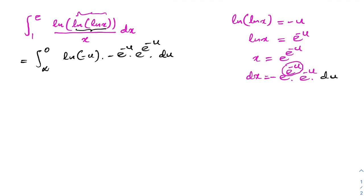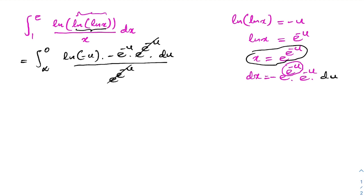Dividing by x, which is e to the e to the minus u, the e to the e to the minus u terms cancel. We have a minus sign, so we interchange the lower and upper limits — this cancels the minus sign — giving us the integral from 0 to infinity of e to the minus u times natural log of minus u, du.